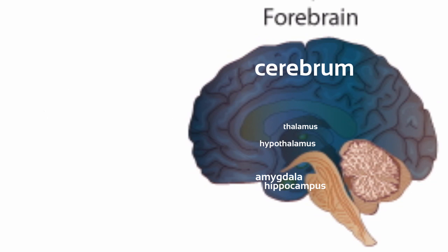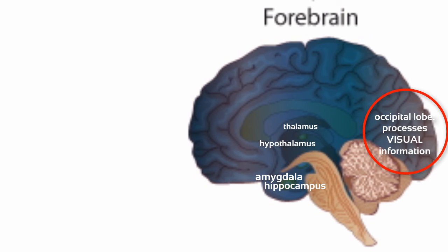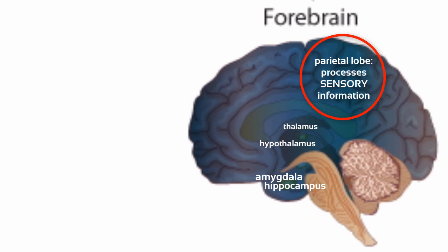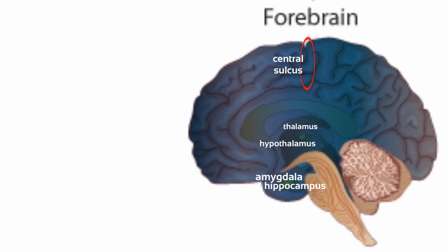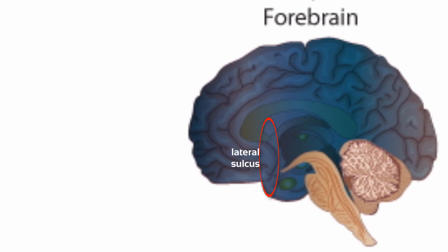Lastly, I want to discuss the organization of the cerebral cortex. The occipital lobe is located at the back of the brain, and it processes visual information. In front of it, we have the parietal lobe, which processes sensory information from the body such as touch, temperature, and pressure. The central sulcus separates the parietal lobe from the frontal lobe, and likewise, the lateral sulcus separates the temporal lobe from the parietal and frontal lobes.